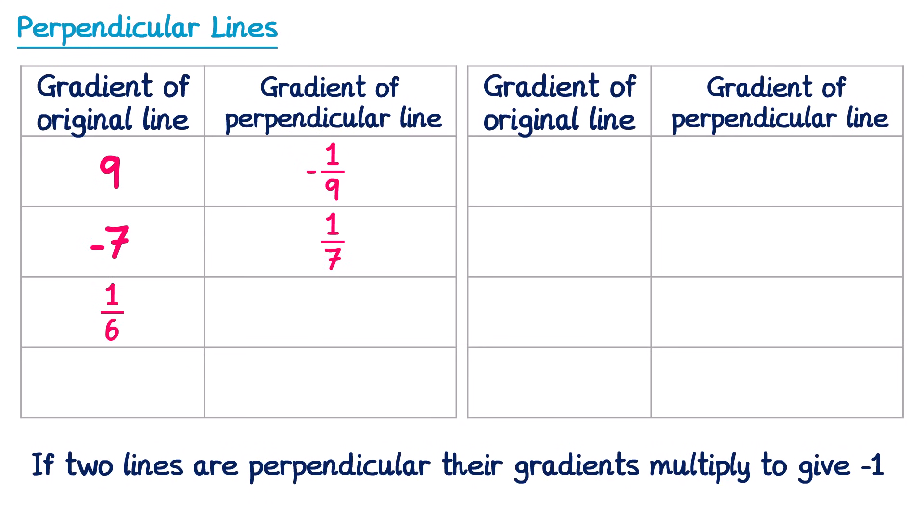If the original line had a gradient of one sixth, we do the reciprocal of this, which is just 6, but since this one's positive, the perpendicular one must be negative — so negative 6. If the gradient was negative one eighth, we do the reciprocal which is 8, and since that's already negative, the new one will be positive — so just positive 8. Now all of these examples so far have something in common: they have an integer (a whole number) and a fraction that's just 1 over something — but that isn't always going to be the case.